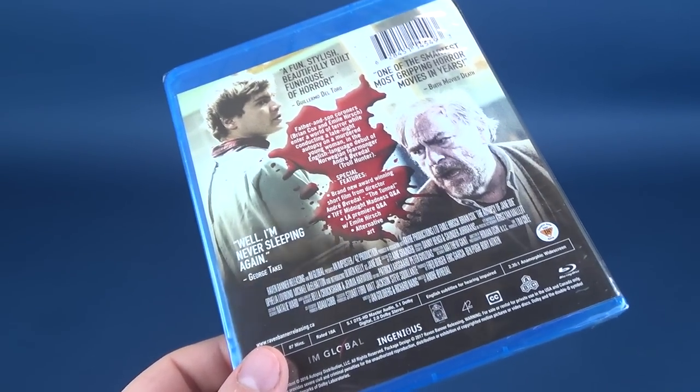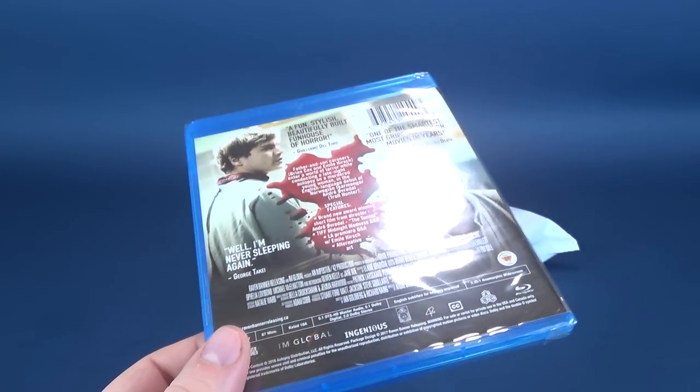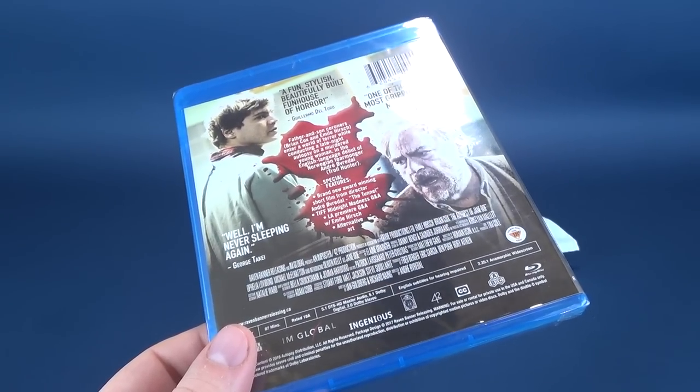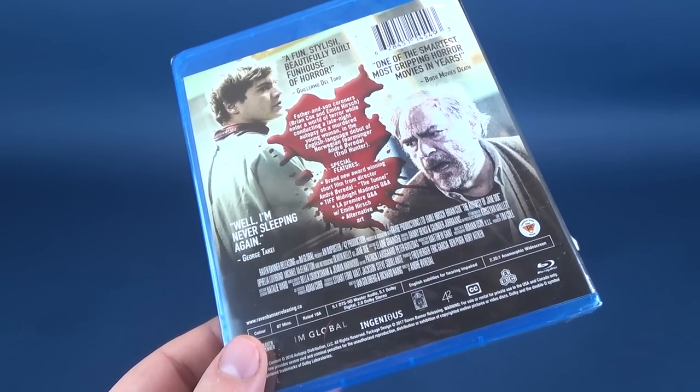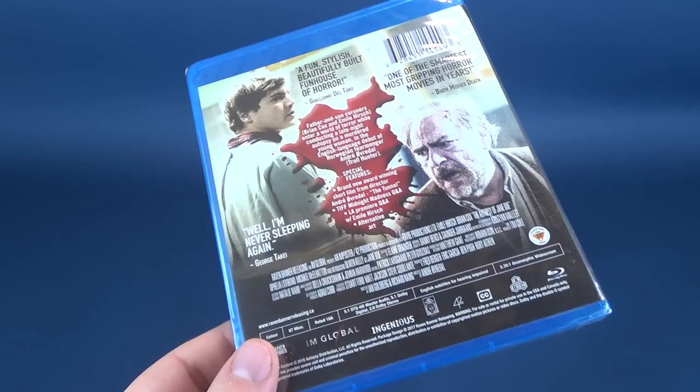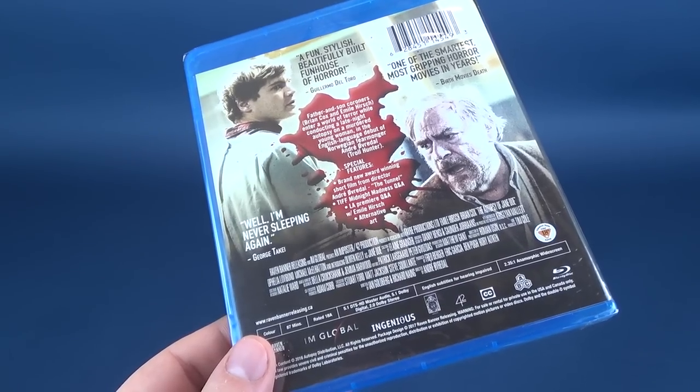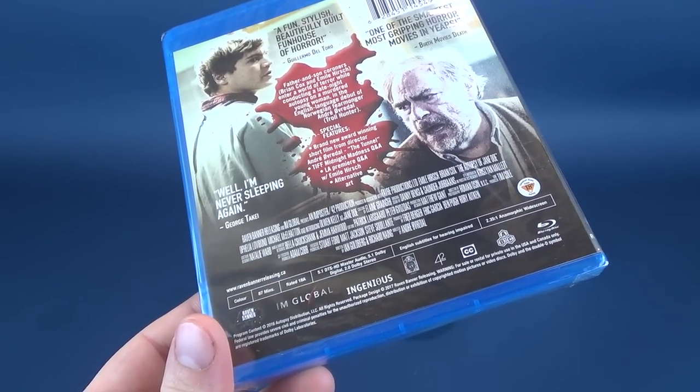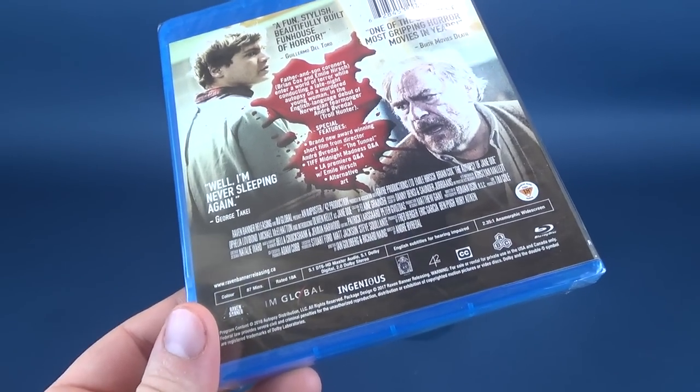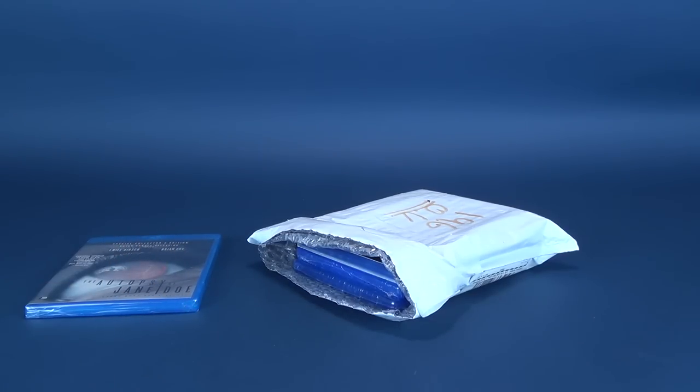And then lastly, Guillermo. I always like saying his name. Guillermo, Guillermo. I usually had that pretty good, but I'm slipping on it right now. Guillermo del Toro. Somebody's laughing right now. A fun stylish, beautifully built fun house of horror. Release date is 2016. Runtime is 87 minutes. Guillermo del Toro. There we go. So that is The Autopsy of Jane Doe.